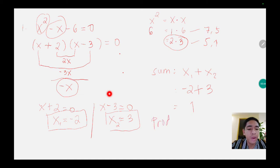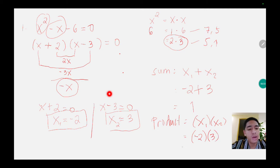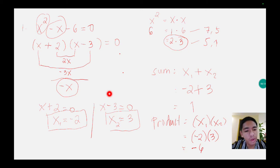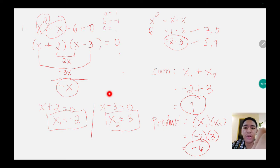Then for the product, we multiply the roots: x sub 1 multiplied by x sub 2. x sub 1 is negative 2 and x sub 2 is positive 3, so negative 2 multiplied by positive 3 is equal to negative 6. So the sum of roots is 1 and the product of roots is negative 6. By the way, our a value is 1, b value is negative 1, and c value is negative 6.